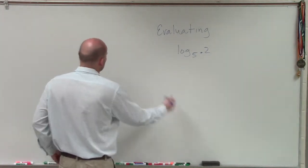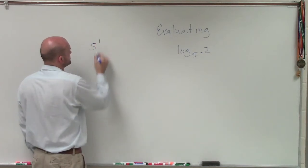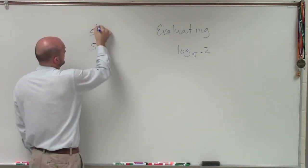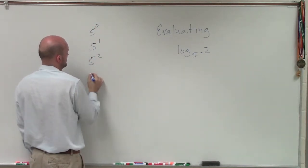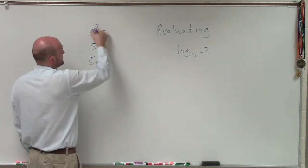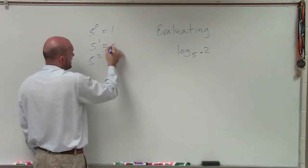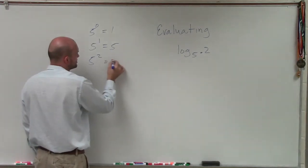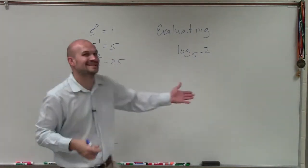When you're looking at this problem, you can just think about your simple numbers. Could it be 5 to the 1, 5 to the 0, 5 squared? When we're looking at these, we know 5 to the 0 is 1, 5 to the first is 5, 5 to the second is going to be 25. So obviously, this is a decimal.